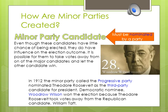Minor parties tend to be created more to promote ideas and get people thinking about new ideas. Libertarians are in favor of limited government and don't want the government creating too many laws and getting involved in people's lives. The Socialist Party, organized in 1901, wants group ownership and equal distribution of wealth. The Socialist Labor Party wants workers to control businesses. These three parties have never had a successful presidential candidate, but their ideas continue to influence debates and party platforms.